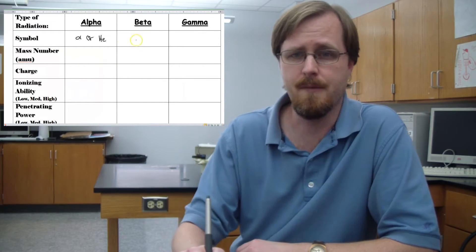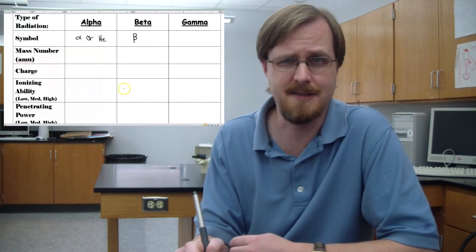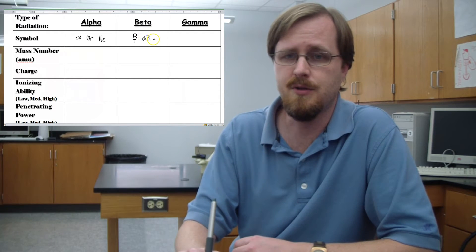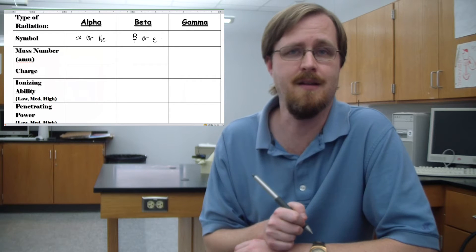The beta particle here is the Greek letter beta, which is a capital B with a little tail on it. Or what you can do is you just use a lowercase e because the beta particle is an electron.